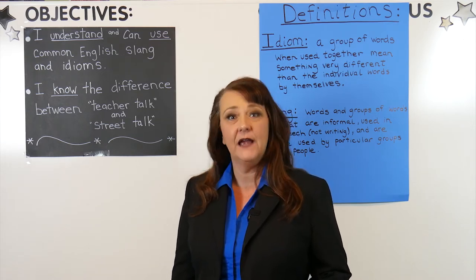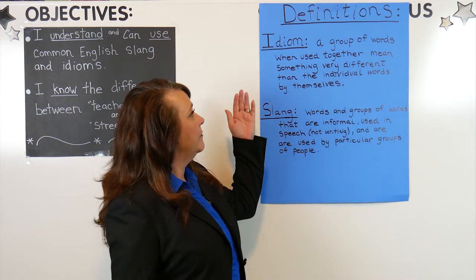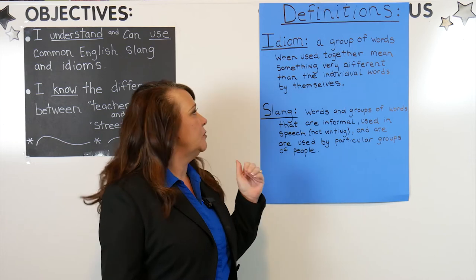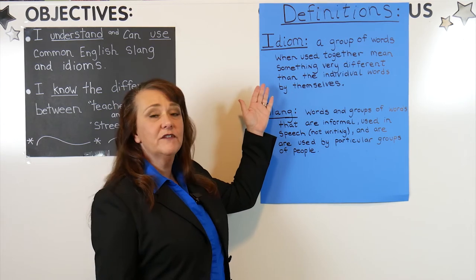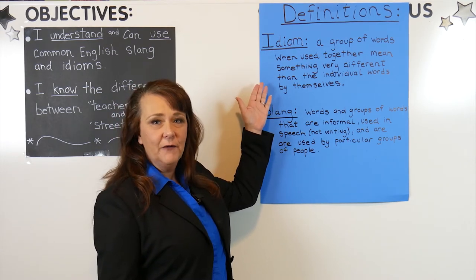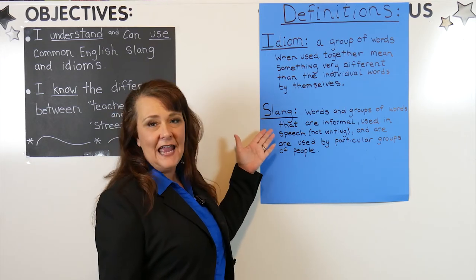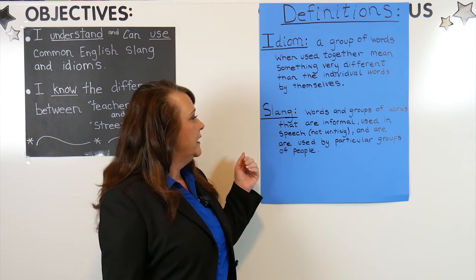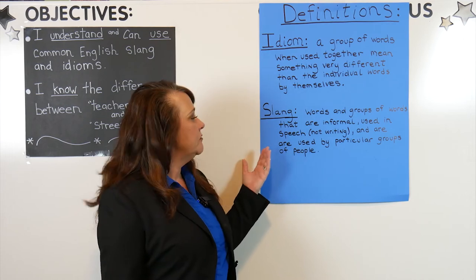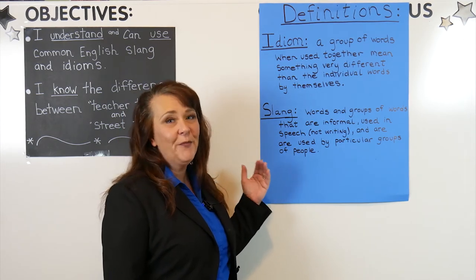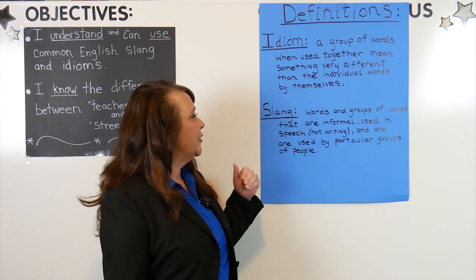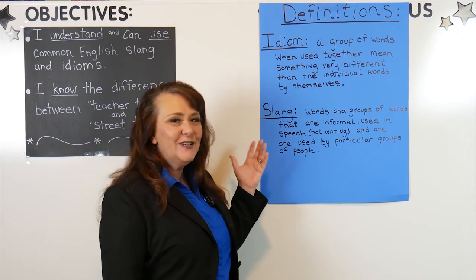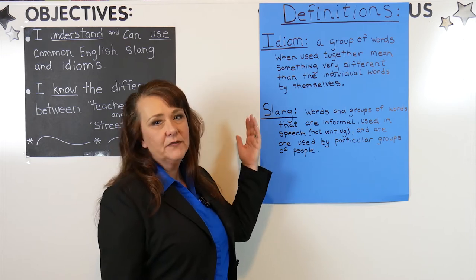Let's review what an idiom is and what slang is. An idiom is a group of words that when we use them together, it means something very different than the individual words by themselves. Idioms are very commonly known with people who speak English as their first language. Slang is also a group of words or an individual word that is informal. It's used in speech and not in writing, and it's usually used with a particular group of people — not commonly known through all groups. For example, teenagers have slang. So those two are very different, but yet a little bit the same. We're going to learn both slang and idioms in these lessons.